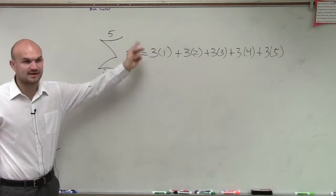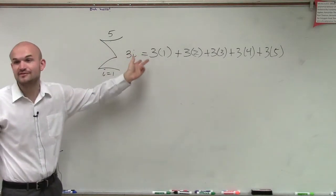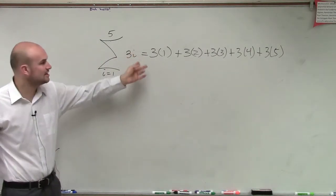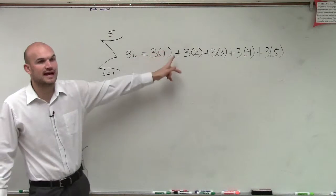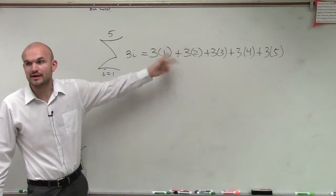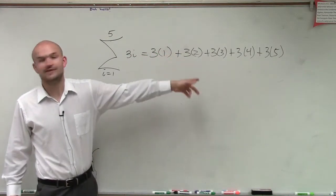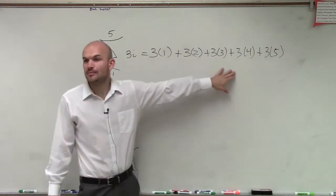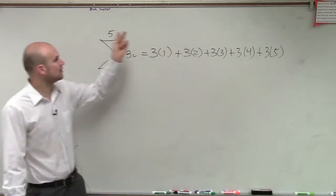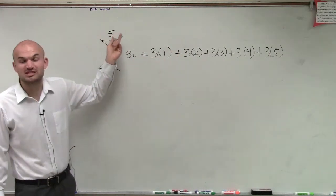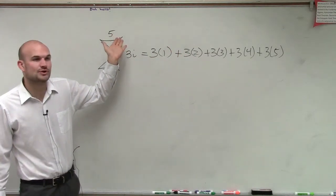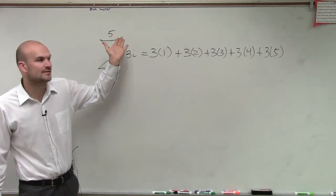Just remember the sequence — if I said find the first four terms, you'd plug in: a sub 1 would be there, 2, 3, 4, and 5. But now we're finding the sum. It's a partial sum because we're only going to go up to 5.